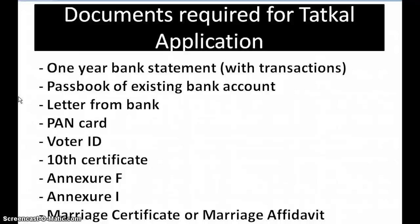You will also need your PAN card, voter ID, 10th certificate, Annexure F and Annexure I, and a marriage certificate or marriage affidavit if you want your spouse's name printed on your passport. Please get that done as well and submit it along with the other documents.